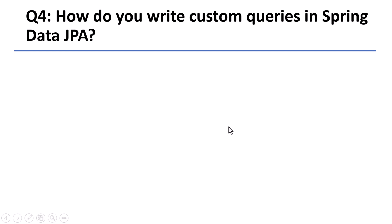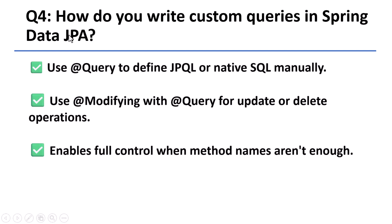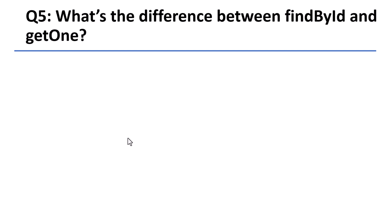Question 4: How do you write custom queries in Spring Data JPA? If method naming is not enough, Spring Data JPA allows you to define custom queries using the @Query annotation. You can write JPQL or native SQL inside this annotation and use parameters to make it dynamic. For update or delete operations, you can use the @Modifying annotation along with @Query.